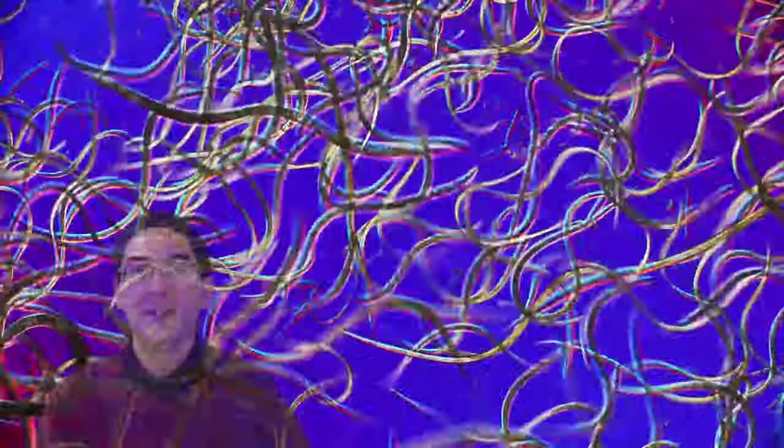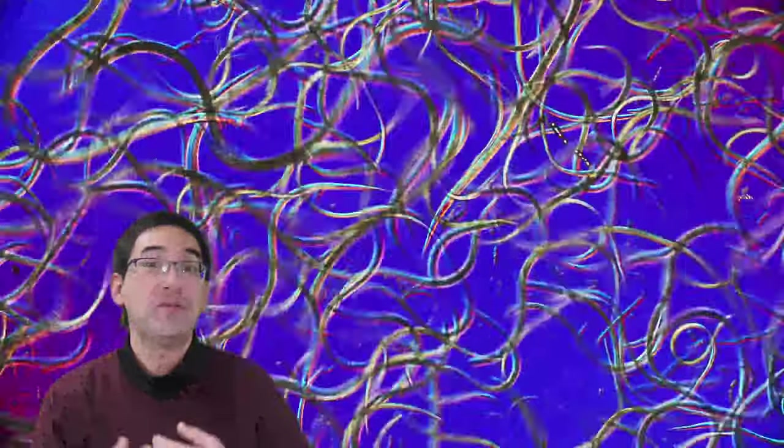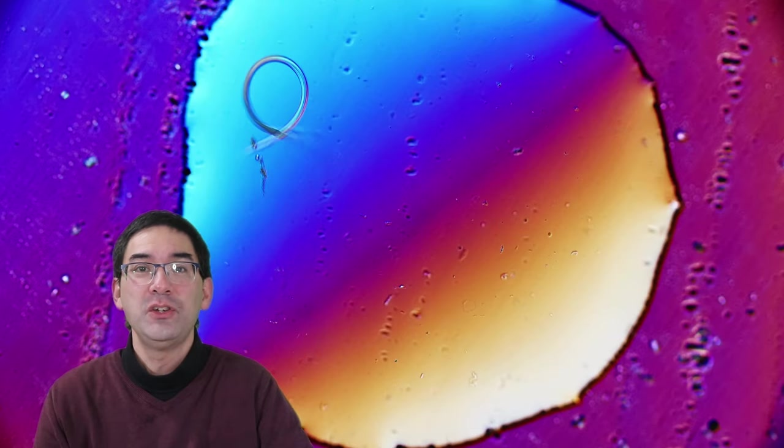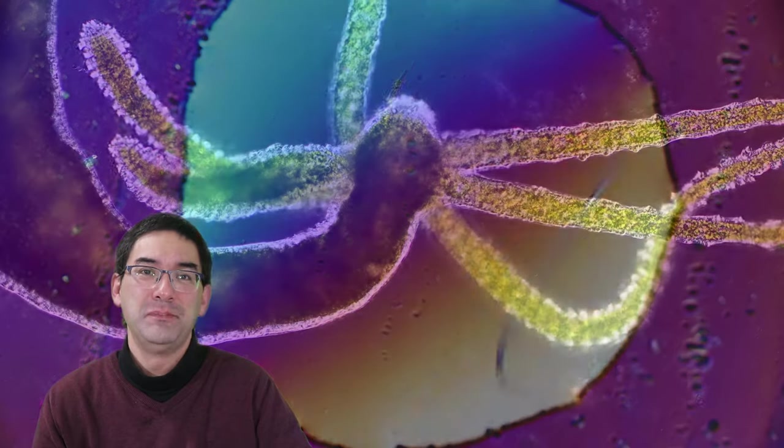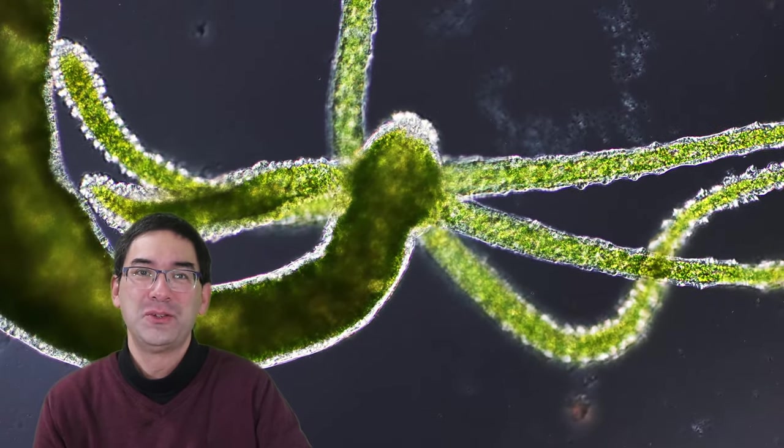And these are the worms that I used to feed the Hydra. These are so-called vinegar eels and they can be bought as fish food for little tiny baby fry. And I've isolated the individual worms here in a drop of water and then I've been feeding those worms to the Hydra.